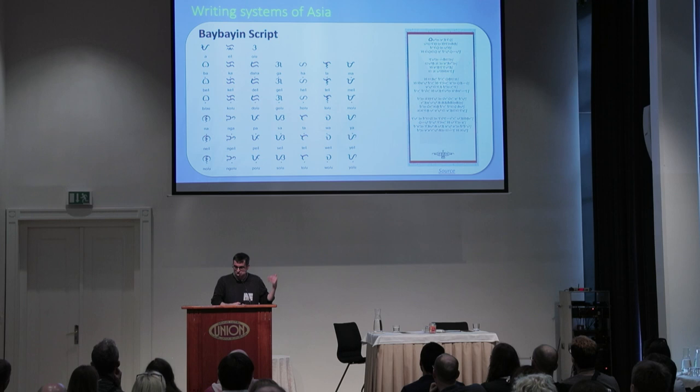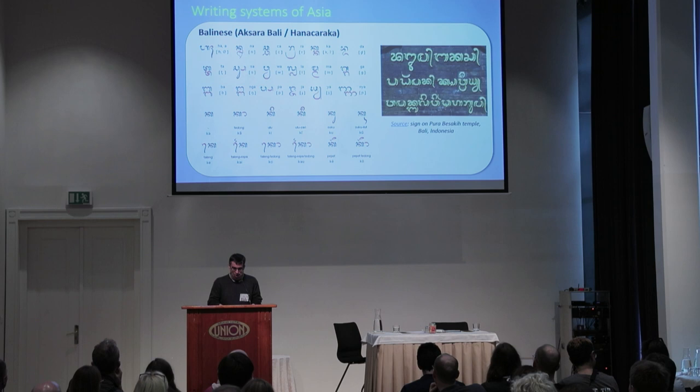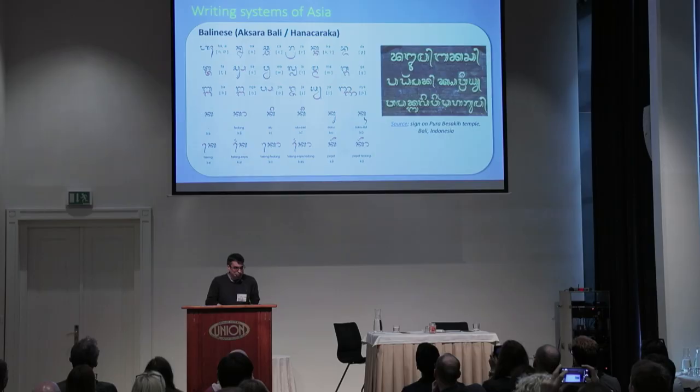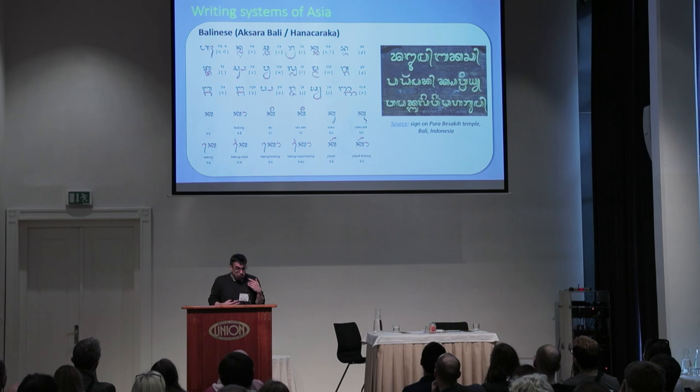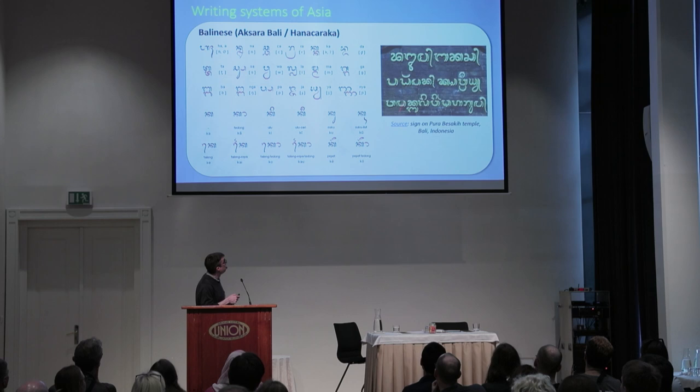One of my favorite scripts is Balinese. It developed from an old script called Kawi, used in Java until about the 11th century, and was originally written on palm leaves. A lot of scripts in Southeast Asia and South Asia are very rounded with no straight lines, because on palm leaves straight lines would just tear the leaf. It was used in Bali to write Balinese and is still used to some extent, mainly in traditional ceremonies, for writing religious texts, and for decoration.